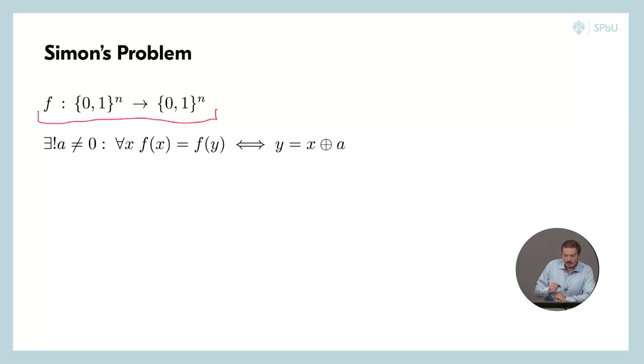And this function has this strange period. It's like a period in Z modulo 2. So it is some number A for which holds this property. If we add this number A or if we XOR some input with this number A, then we don't change the function value. And the function's values are equal only if the inputs meet this equality. The problem is to find A.